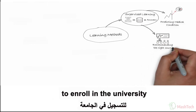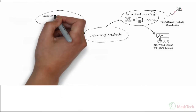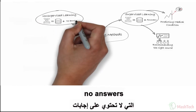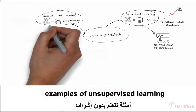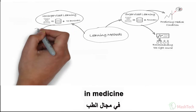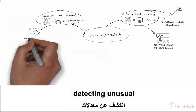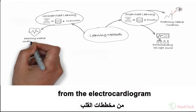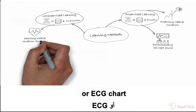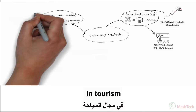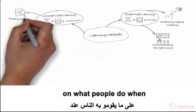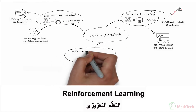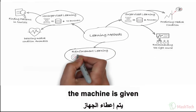The second is unsupervised learning — here you train the algorithms with data that contains no answers. Examples include: in medicine, detecting unusual and unknown heartbeat rates or rhythms from electrocardiogram (ECG) charts; and in tourism, finding patterns on what people do when visiting various tourist attractions.